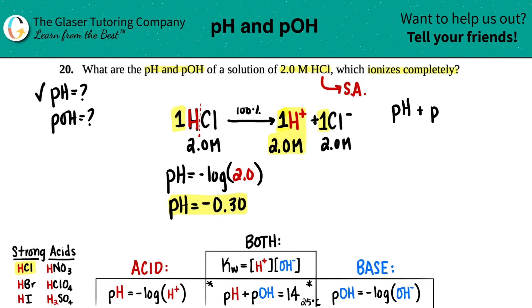So pH plus pOH equals 14. If I just want to solve for pOH and just rearrange that formula, it would be 14 minus the pH.